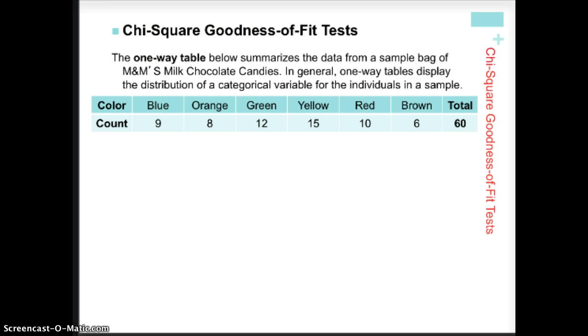So the one-way table that we're looking at here has the different distribution of colors. This is what we saw in our sample. This is our observed value. And the total sample size is 60. The colors are counts, okay? So we got nine blue M&Ms, eight orange M&Ms, etc. So these are actually counts.